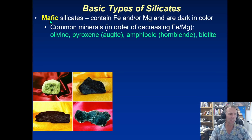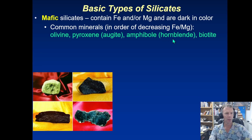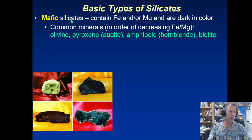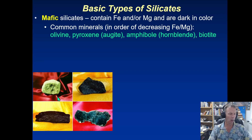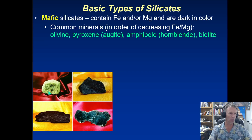There's a group called the mafic silicates. Mafic silicates are silicate minerals — they contain silicon and oxygen — but they also have a few other ingredients: either iron or magnesium. They tend to be quite dark in color because of the elements they contain. Here we have olivine, which is a typical olive green color; pyroxene, sometimes called augite; amphibole, sometimes called hornblende; and biotite, or biotite mica. You can see they're quite dark in color.